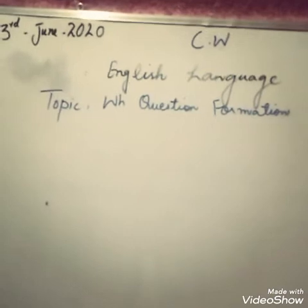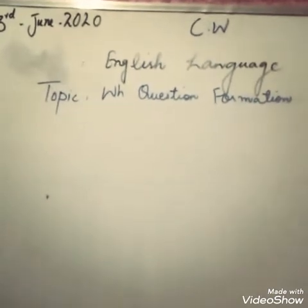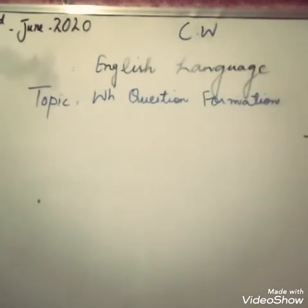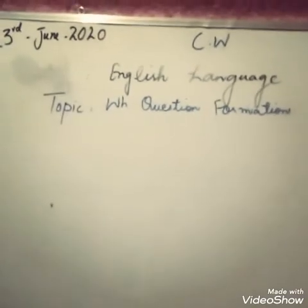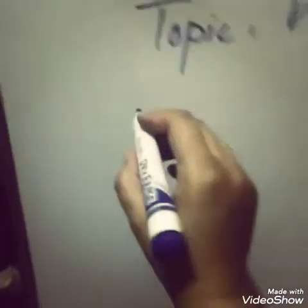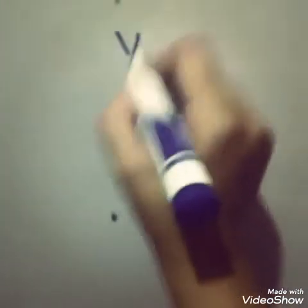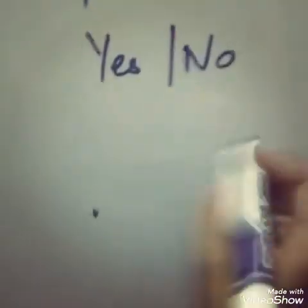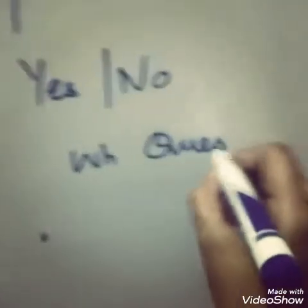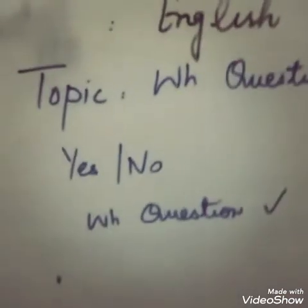Assalamualaikum, 5th class! How are you? Hope you all are fine. I am your English teacher and today we have a topic of English language that is WH question formation. First of all, you all must have your activity book and open page number 7. Basically, we have two types of questions: number one is yes/no, and the second one is WH question. So today we will do the WH question formation.